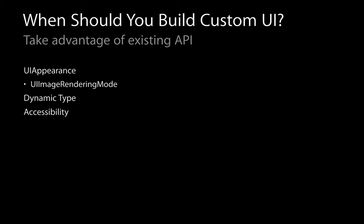Accessibility is a critical part of iOS. We care deeply about making sure our operating system is accessible to as many people as possible. There are powerful APIs around accessibility that are important to use if you build custom UI. There's no reason to not support accessibility in your app. And finally, localization — another critical part of iOS — with new localization tools in iOS 8 that make this even easier.